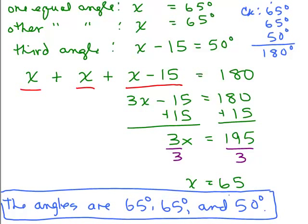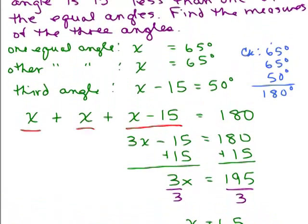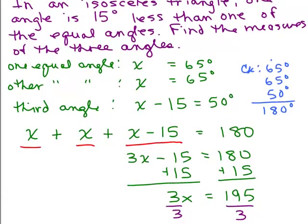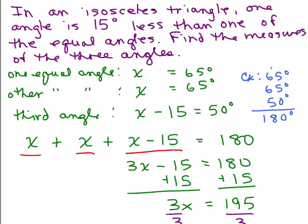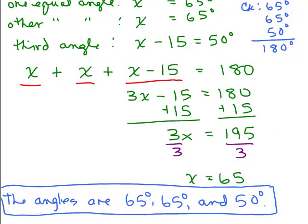And actually, you want to go back up to the words and see if that makes sense. If they were 65, 65, and 50. Let's see, does it make sense? It says, in an isosceles triangle, one angle is 15 degrees less than one of the equal angles. Is it true that this angle, 50 degrees, is 15 degrees less than one of these equal ones? Yes, it is. You can see that it's 15 degrees less. So it does make sense. And so this is the correct answer. The angles are 65 degrees, 65 degrees, and 50 degrees.